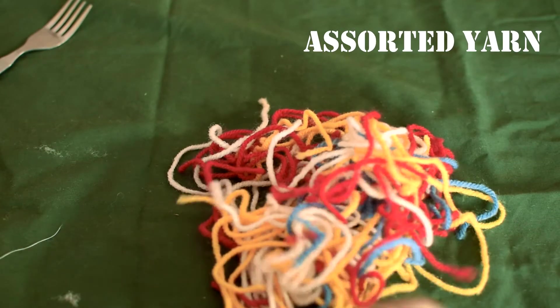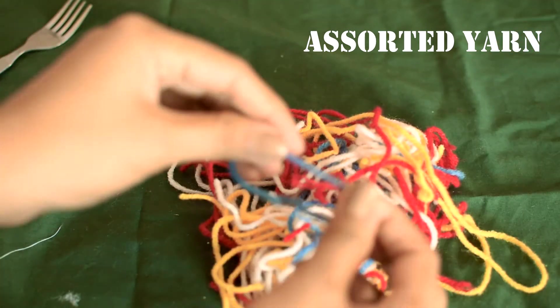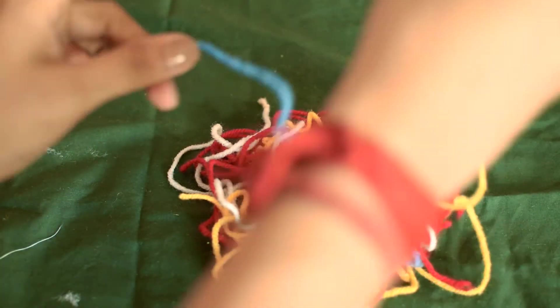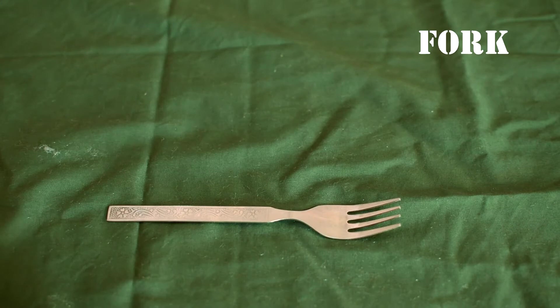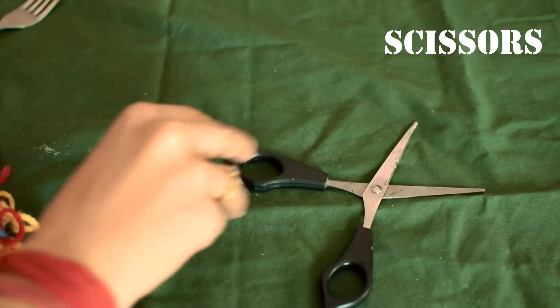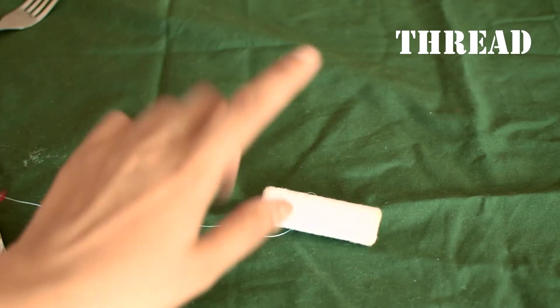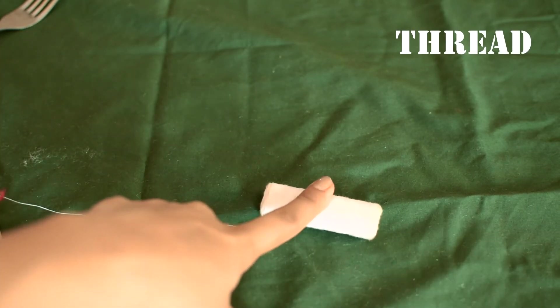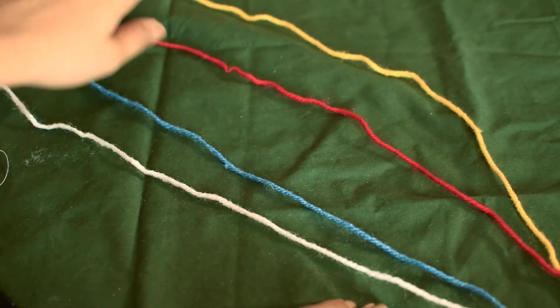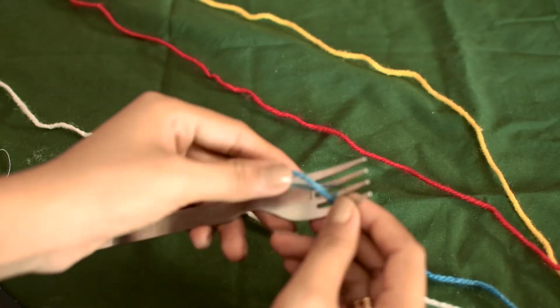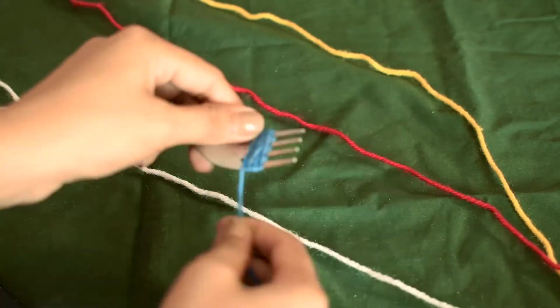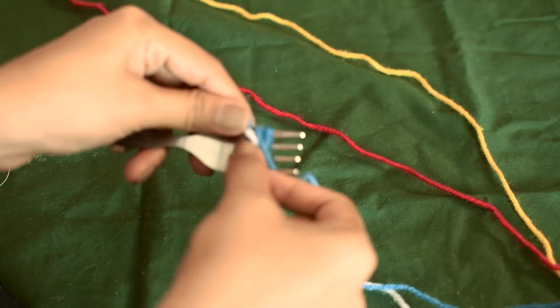Now I'm going to show you guys how to make multicolor pom-poms. All you need is some assorted yarn, a fork, a pair of scissors, and some thread. I actually ended up not using the thread. Here I've chosen four colors and again I'm doing the same thing, inserting my first color through the middle of the fork and going all around with it.